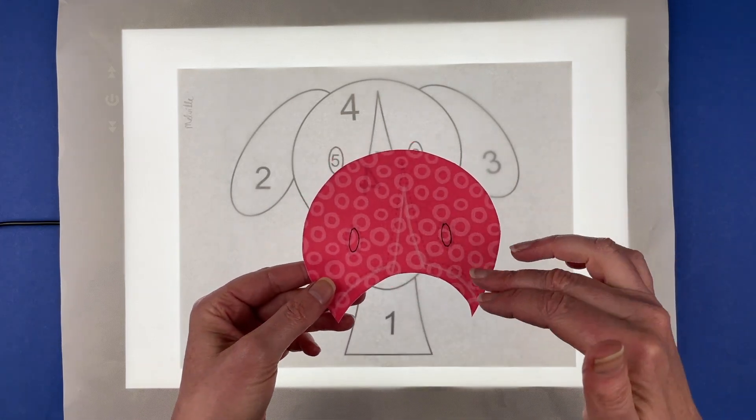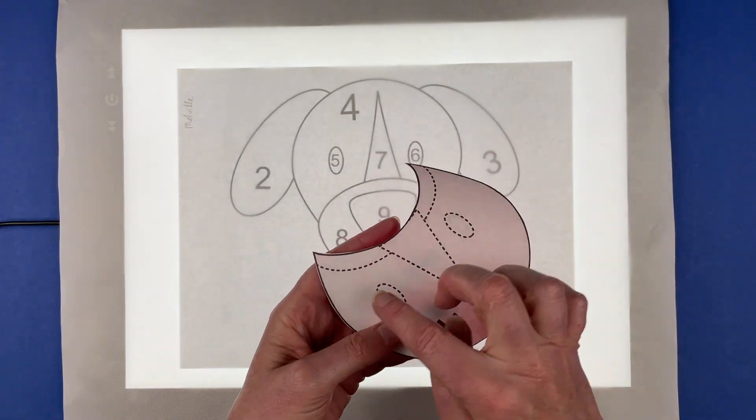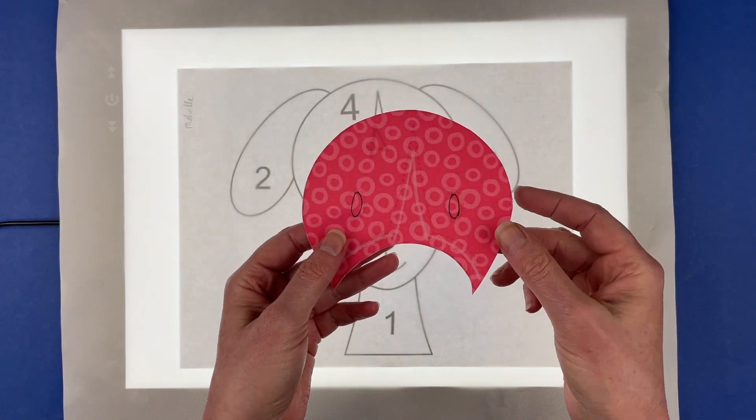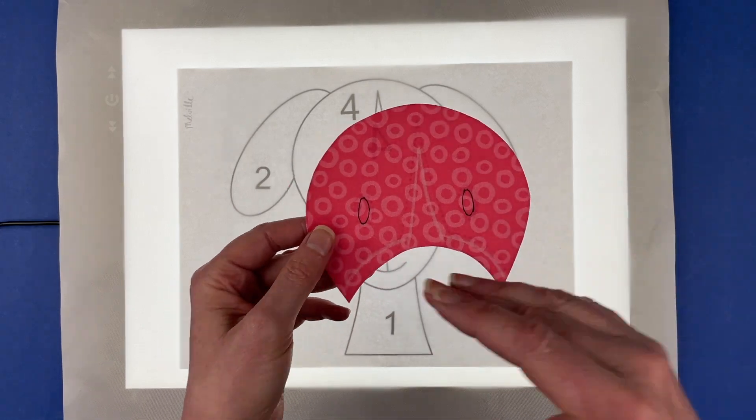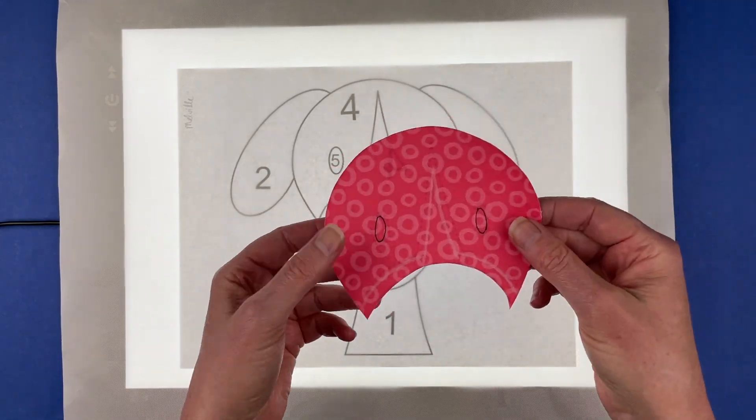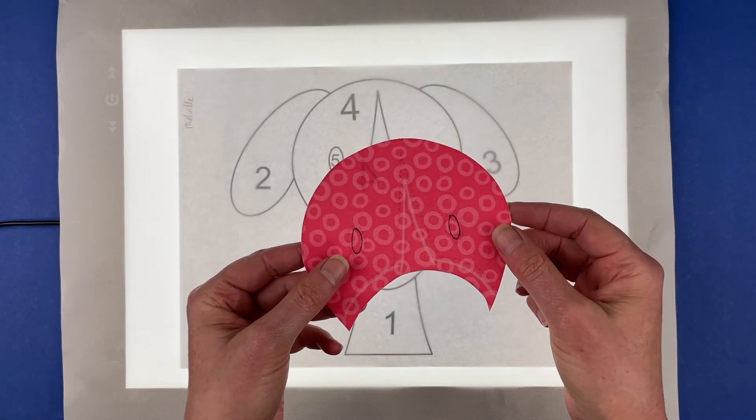One thing to point out is if you're not using a light box, you need to transfer all of these dotted lines that are on the back of the pattern onto the front pattern to use as a placement guide. Since I've used these same pieces for both methods, you're going to see those dotted lines transferred over onto the front.